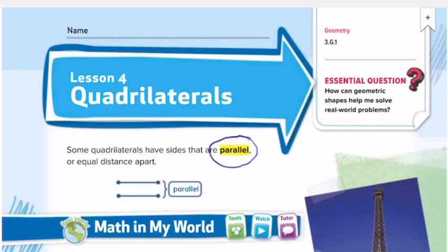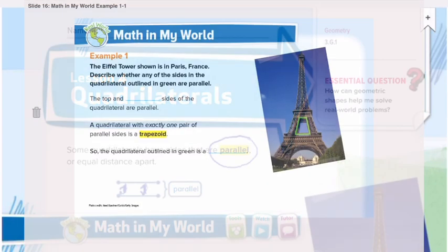Parallel means they are equally distanced apart. Take a look at these two lines. Both of them are equally distanced — they are parallel. They are opposite to each other, and equal in distance apart. If you take your ruler and measure all the parts between these two lines, you will find them all exactly the same.